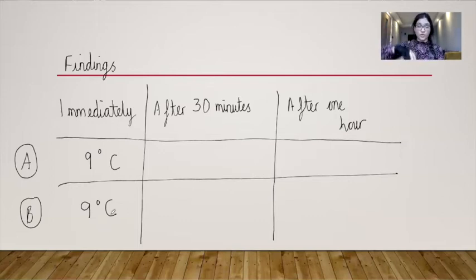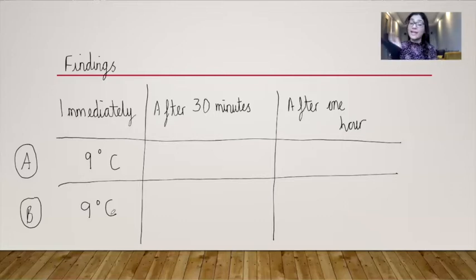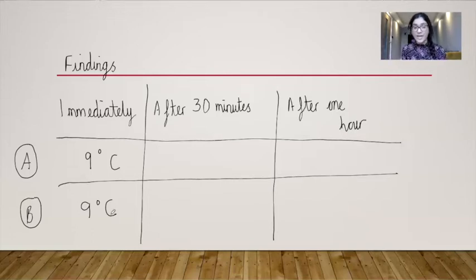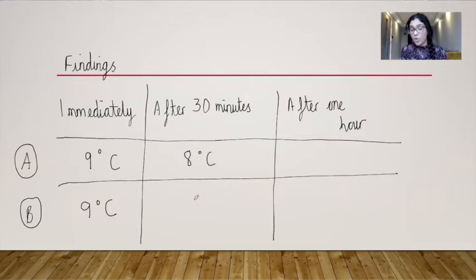That was with the container on top as well — I managed to peek and check the temperature. I left the thermometers there, one as it was and one with the container on top, then came back to record the temperature 30 minutes later. I found that the temperature without the container was eight degrees Celsius, and for the thermometer with the container, it was 10 degrees Celsius.